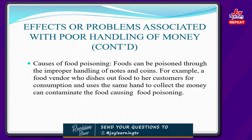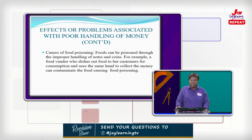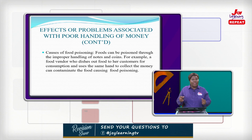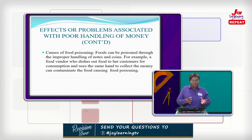Another effect is food poisoning. Foods can be poisoned through the improper handling of notes and coins. For example, a food vendor who dishes out food to customers and uses the same hand to collect money contaminates the food by making it poisonous.